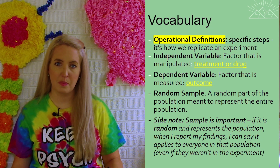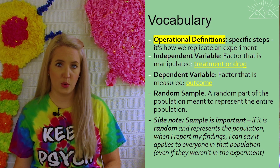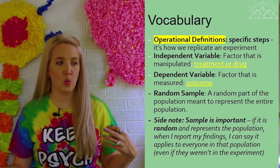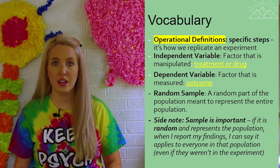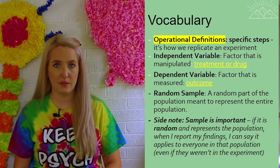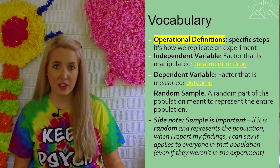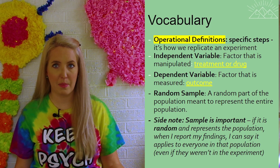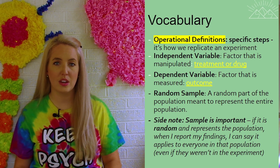Once we have our independent and dependent variables, we need some subjects to do this experiment on. When selecting our subjects we need to use what's known as a random sample — a random sample of the population. We might use a computer program that selects every third student and asks them to participate. This means everybody has an equal opportunity to be selected, and therefore if it is a random sample we can apply it to the population afterwards. This is really important — in order for our experiment to be valid it needs to be representative of the population as a whole.